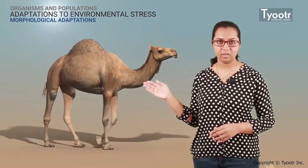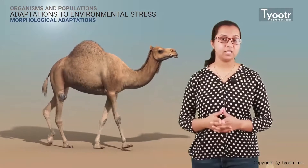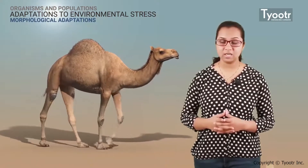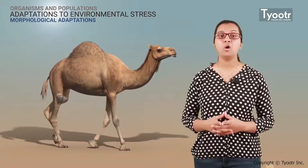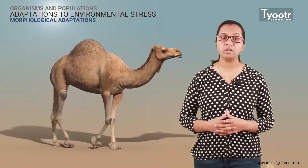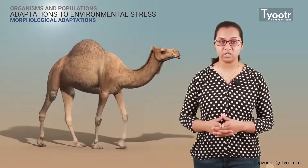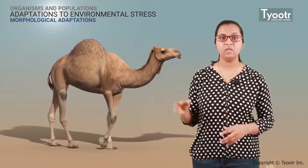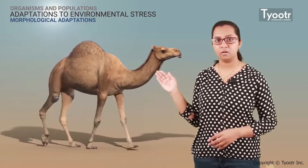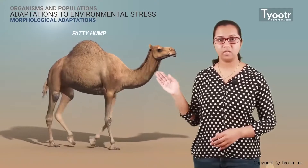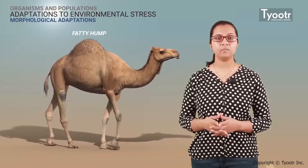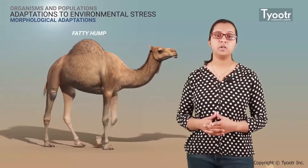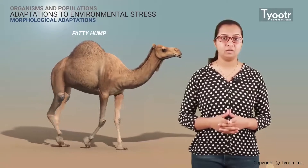This is a desert camel. The desert camel can very well sustain itself in harsh hot climatic conditions of the desert. We can see a big hump on its back — this hump is responsible for storing fat.